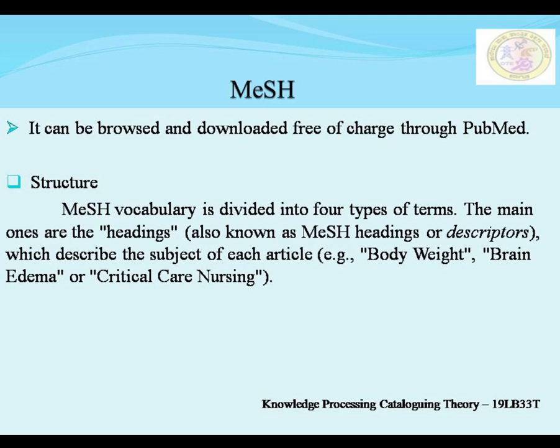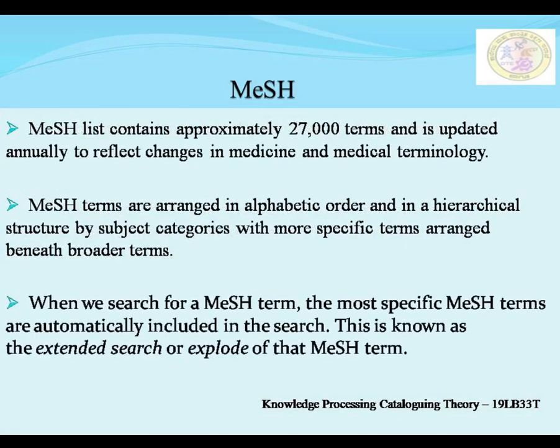Now, what is the structure of MeSH? MeSH vocabulary is divided into four types of terms. The first type is MeSH headings or descriptors. MeSH headings or descriptors describe the subject of each article — the subject of each article is given, for example: body weight, brain edema, critical care nursing. These are the subject headings of articles, called the main headings or MeSH headings or descriptors. The MeSH list contains approximately 27,000 terms used in the medical field.